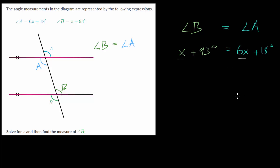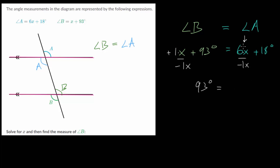Notice we have variables on each side of the equation, so we need to move them to one side. I generally recommend moving them to the side with more of that variable — 6 is greater than 1 — that way you can avoid negative numbers. So let's cancel out this 1x by subtracting 1x, which gives us 93 degrees equals 6x minus 1x, which is 5x, plus 18 degrees.